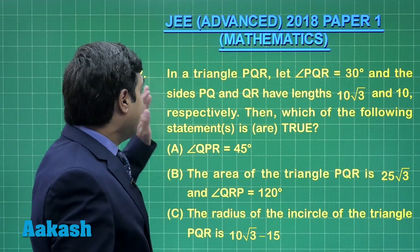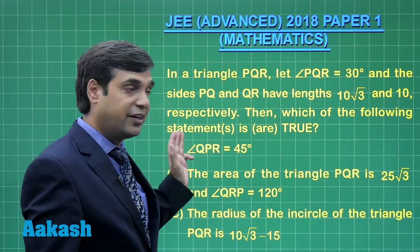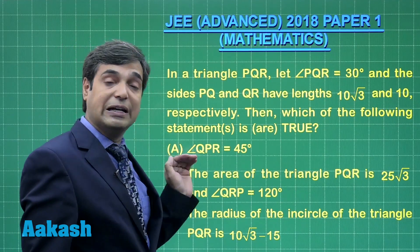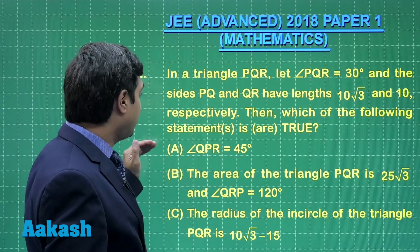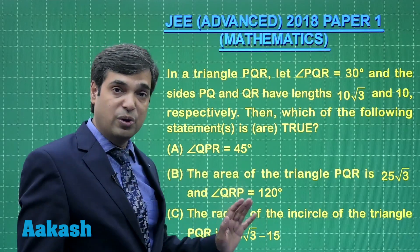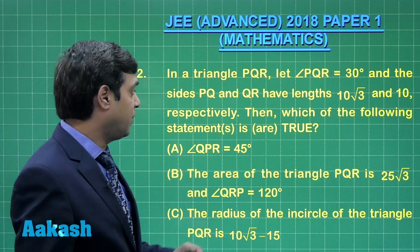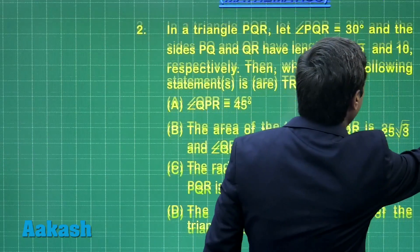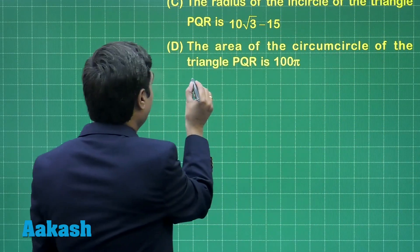Now question number 2 says in a triangle PQR let angle PQR equals 30 degrees and the sides PQ and QR have lengths 10 root 3 and 10 units respectively. Then which of the following statements is are true. Similar type of question, 4 options are given, we have to choose this time correct option. This question is from trigonometry, that is properties of triangle part. So let us draw the triangle first, starting the solution.